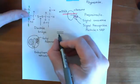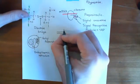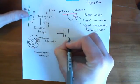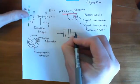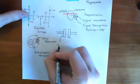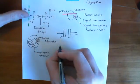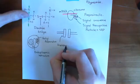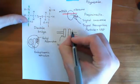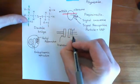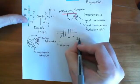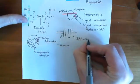Here is the lipid bilayer of the endoplasmic reticulum. There is an important structure within this lipid bilayer that helps proteins get from the cytoplasm into the ER lumen — this is known as a translocon. Translocons in the ER membrane are associated with another protein, which is a signal recognition particle receptor, an SRP receptor.